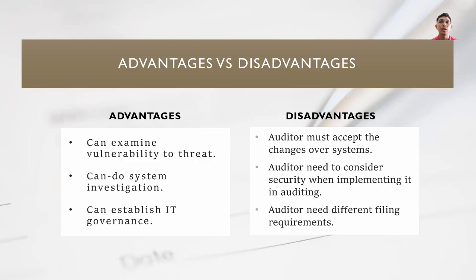The second point is that IT in auditing can also perform system investigation. An IT audit will inform businesses if they are investing in the right systems. It verifies that the system is operating properly and fulfilling all objectives and goals set for it. If there is a problem, the IT auditor will recommend adjustments to make the system more efficient. The third point is that it can also establish IT governance, which consists of leadership, the entity's framework, and procedures that support and maintain the organization's plan of action and objectives.